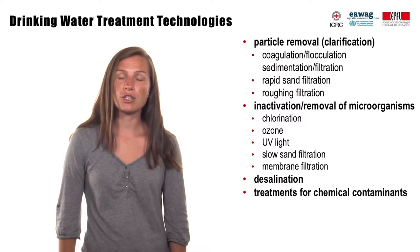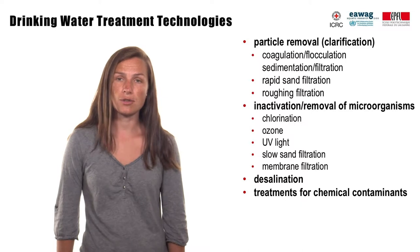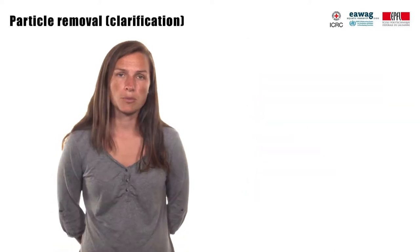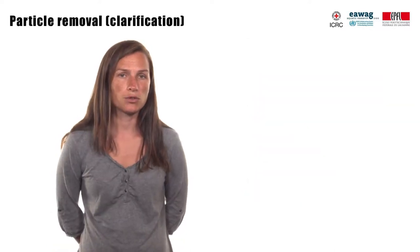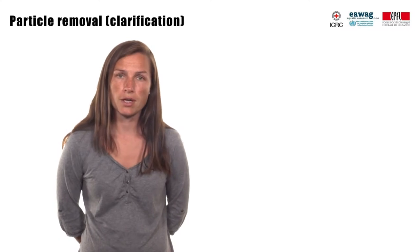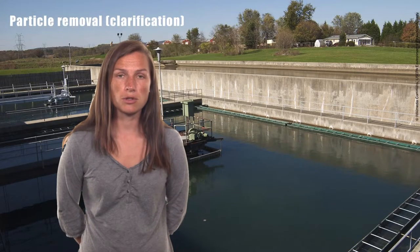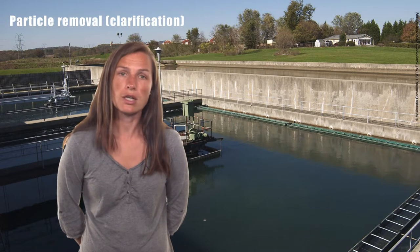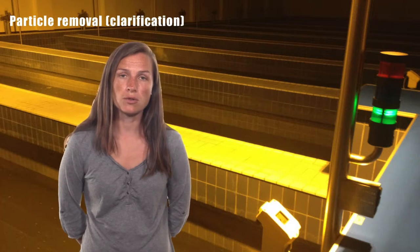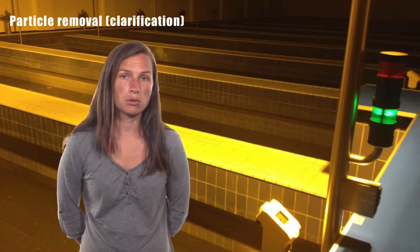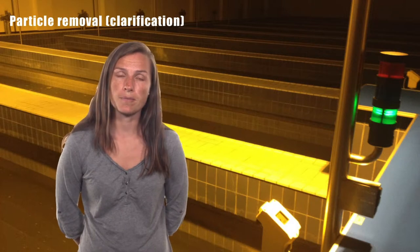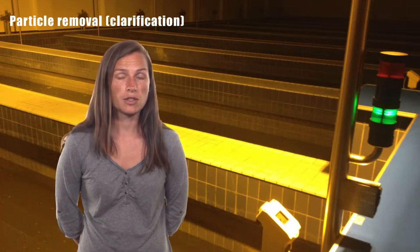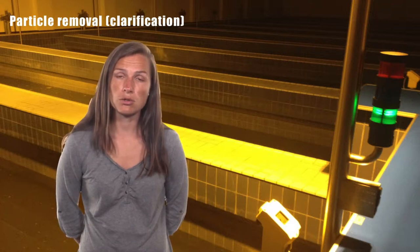A meaningful combination of technologies is in most cases necessary to achieve the WHO water quality standards for safe drinking water. The purpose of clarification is to remove as much particulate material as possible. Conventional treatment systems usually apply coagulation and flocculation combined with sedimentation or filtration. Rapid sand filtration without coagulation is used as well on large centralized drinking water treatment plants or community supplies, where roughing filtration has been used successfully as efficient and low-maintenance pretreatment.